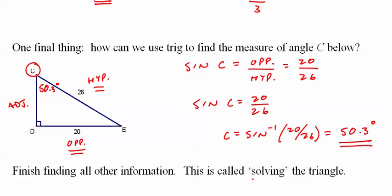If we are to solve the triangle, that means we need to find this angle down here and the adjacent side. Well, we know these angles have to all add up to 180, or that angle C and angle E have to add up to 90. So this is 39.7.